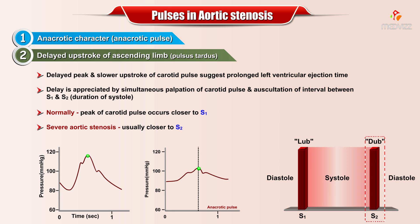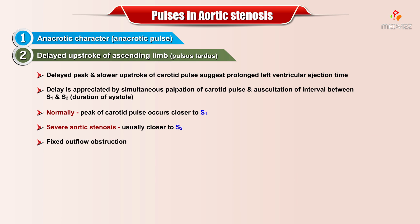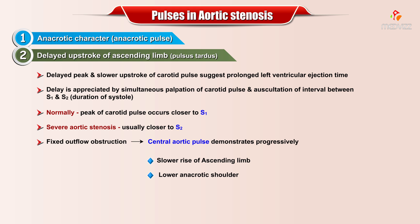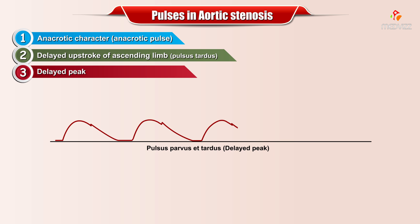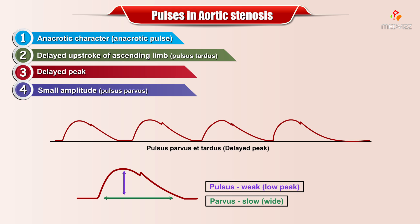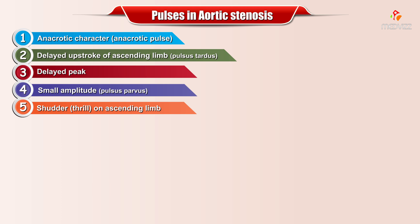In the presence of severe aortic stenosis, the carotid pulse peak is usually closer to S2. In the presence of fixed outflow obstruction, the central aortic pulse demonstrates a progressively slower rise of the ascending limb, a lower anacrotic shoulder, and a peak closer to the incisura as the severity of obstruction increases. The third of the pulses seen in aortic stenosis is a delayed peak. The fourth is pulsus parvus, or a small amplitude pulse. The amplitude of the pulse decreases with a diminished stroke volume. A carotid shudder or thrill is also frequently palpable on the ascending limb of the pulse.